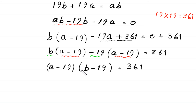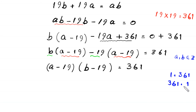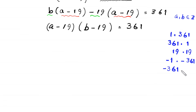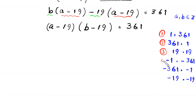Now we have a product of two factors on the left hand side, and since a and b are integers, 361 can be factorized as: 1 times 361, 361 times 1, 19 times 19, negative 1 times negative 361, negative 361 times negative 1, and negative 19 times negative 19. So we have 6 cases.